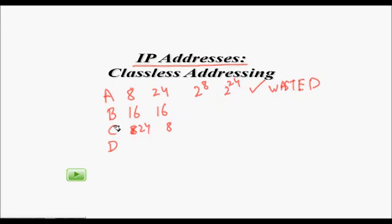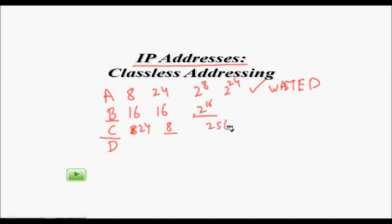For Class B, each network still had 2 to the power of 16 addresses, so there was quite a bit of wastage there too. Class C has many networks but only 8 bits for the host, giving just 256 IP addresses per network, which became too small. Overall, classful addressing was rigid — only fixed class sizes were allowed.